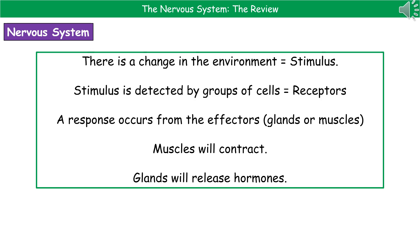Welcome to our review on the nervous system. When we're considering the nervous system, the first thing we need to know are a few key terms we're going to use throughout this topic. The first one is the stimulus. Whenever we talk about a stimulus, we're referring to a change in the environment.